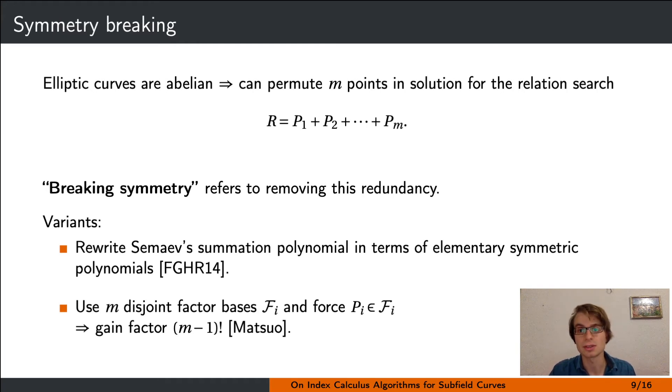Another idea is to use m disjoint factor bases and force the different points in the decomposition to be in different factor bases. That way one removes the factor m factorial due to symmetry breaking, but one needs m times as many relations as we have m factor bases—at least under the assumption that they all have the same size. This idea is attributed to Matsuo.